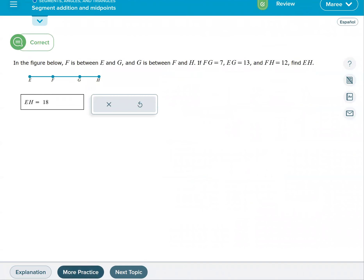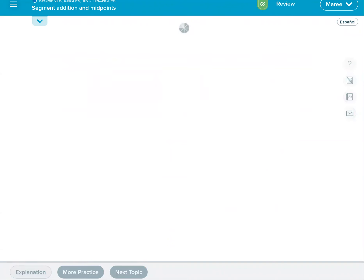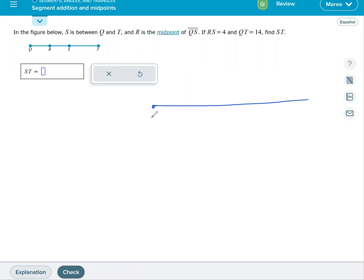Let's look at one more. I like to redraw it. We have Q. Here's an R here. It looks like it might be in the middle, but I'm not sure. T's way out here somewhere. So R is a midpoint of QS.